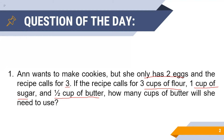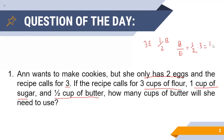Now let us see how we arrived at this particular answer. According to the question, for every 3 eggs, Anne needs to use half a cup of butter. That is, the ratio of butter to egg in the recipe is equal to one-half is to 3, which means B/E = 1/6.